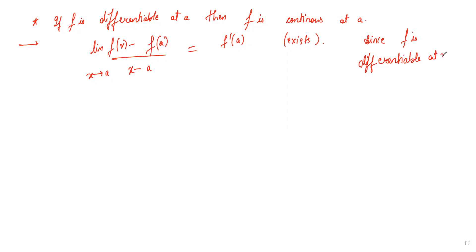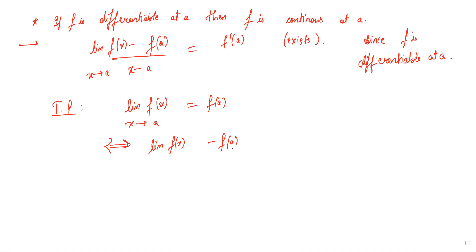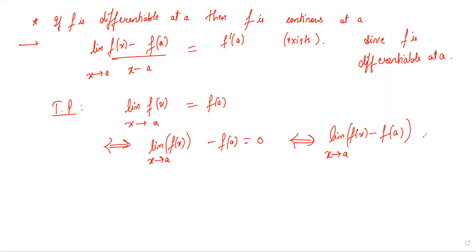Now we have to prove f is continuous at a. This means proving that the limit of f(x) as x tends to a equals f(a), which is equivalent to proving the limit of [f(x) minus f(a)] as x tends to a equals zero. Since f(a) is a constant, the limit of a constant is constant, so we can bring that part inside the limit.